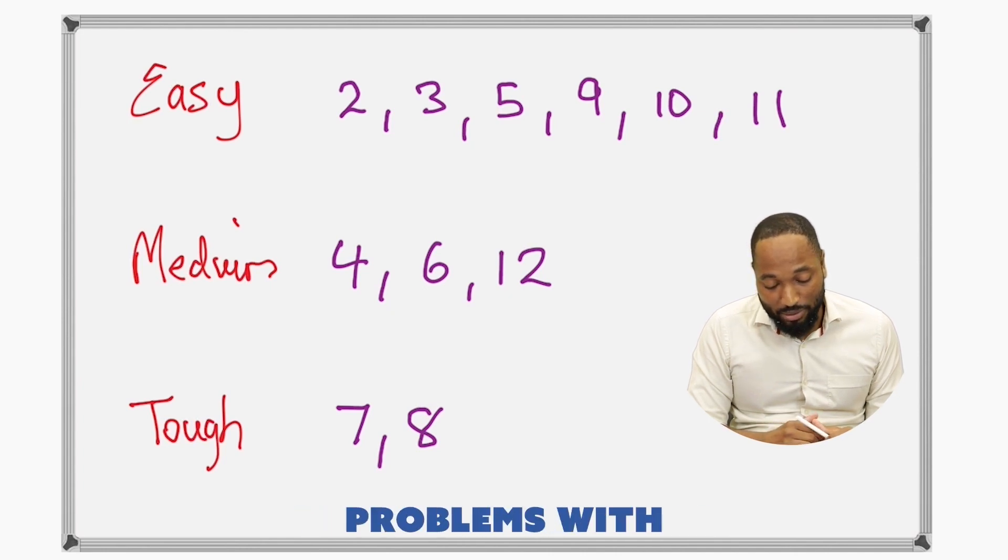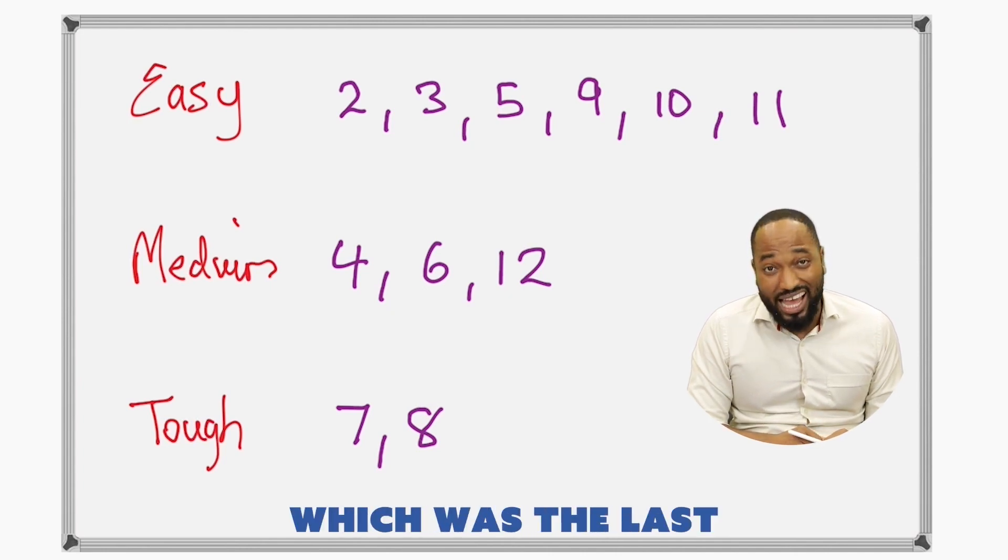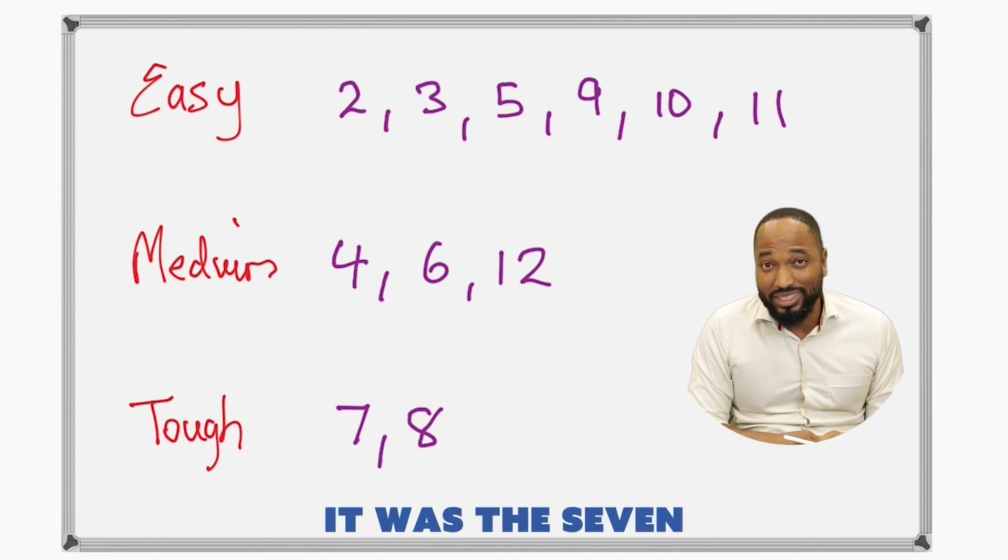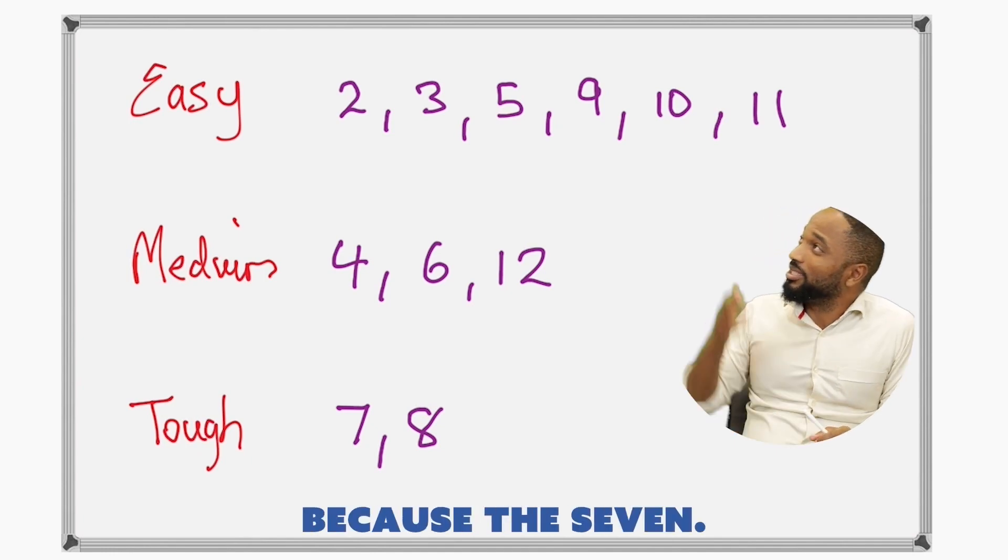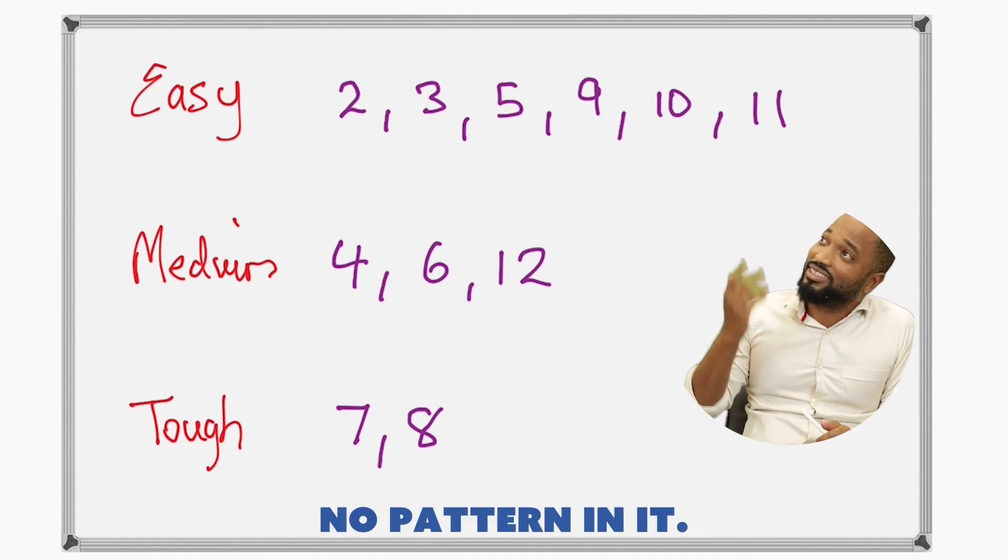Which table you have problems with? Which table you have problems with in your past? Which one's the last table for you to learn? Maybe it was the 7 because the 7 times table, there's no pattern in it. You just have to memorize everything.